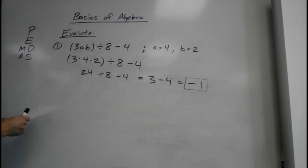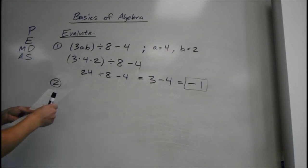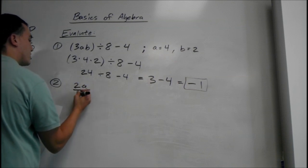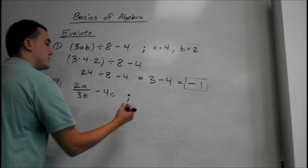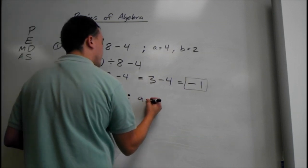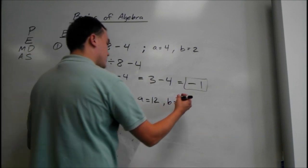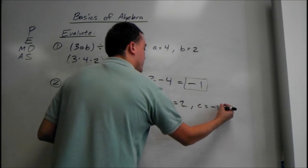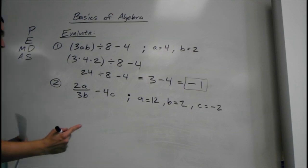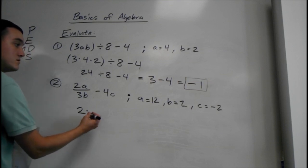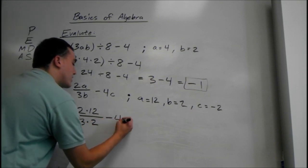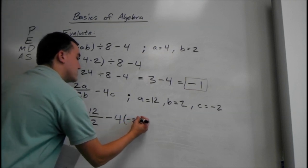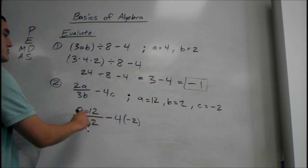Number 2 is similar. We have 2a over 3b, minus 4 times c. And it gives us a equals 12, b equals 2, and c equals negative 2. So first thing to do is plug them in: 2 times 12 over 3 times 2, minus 4 times negative 2. You can plug it in with parentheses or use the dot — either way is fine.